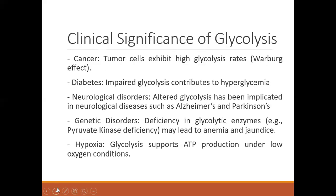What are the clinical significances of glycolysis? Glycolysis takes place at a very high rate in tumor cells — that is called the Warburg effect — and it makes the cell grow very fast. Impaired glycolysis contributes to high blood glucose levels in diabetic patients, and altered glycolysis is implicated in many neurological diseases such as Alzheimer's and Parkinson's. Deficiency in glycolytic enzymes such as pyruvate kinase deficiency may lead to anemia and jaundice. Glycolysis also supports ATP production under low oxygen (hypoxic) conditions.